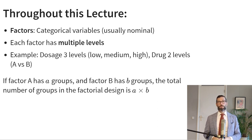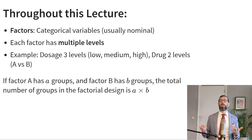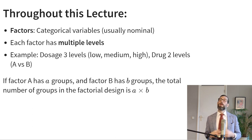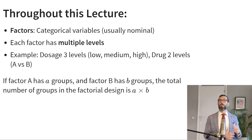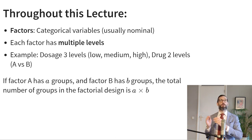Throughout this lecture I will use the following language. When I speak about factors, I'm talking about categorical predictors — usually nominal but they could be ordinal. Each factor has multiple levels, which are the unique categories of the categorical variable. For example, the factor dosage might have three levels: low, medium, and high — that's an ordinal factor. A factor drug might have two levels: drug A versus drug B. If factor A has lowercase a groups and factor B has lowercase b groups, then the total number of groups in the factorial design is a times b, because there are that many unique combinations of levels.